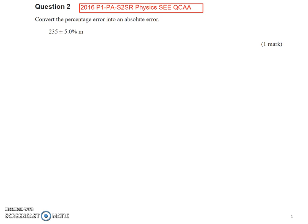What we need to do is we need to calculate 5% of 235. There's a few different ways of doing this. 5% is in fact 5 over 100 of 235.